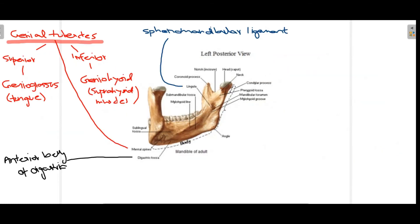Moving on towards the left posterior view of the mandible — viewing from behind — there are certain structures that can be better appreciated from this angle. Towards the base of the mandible is the digastric fossa, a depression-like structure that holds the anterior belly of the digastric muscle. The digastric muscle has two bellies — anterior and posterior — and the anterior belly attaches at the digastric fossa.